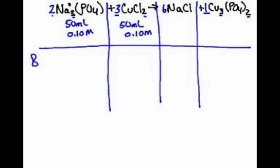So B, C, A — before, change, and after. Now we're going to do M times V equals mol. So 50 times 0.1 is simply 5 millimoles. And this is also 5 millimoles.